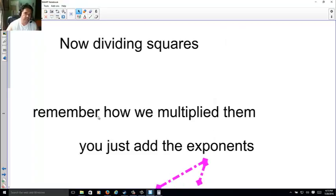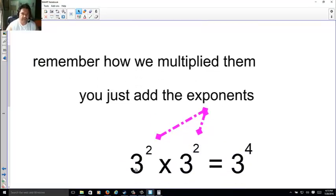Now, dividing squares. Remember how we multiplied them. You just take, remember, 3 to the 2nd power times 3 to the 2nd power, meets 3 to the 4th power, because you're adding exponents up.